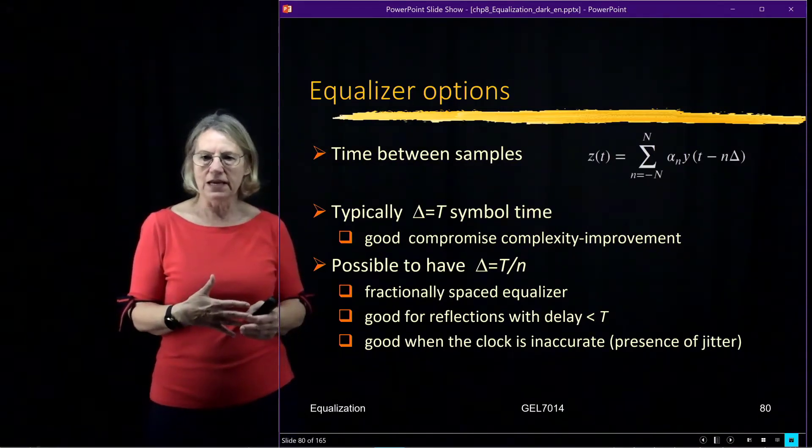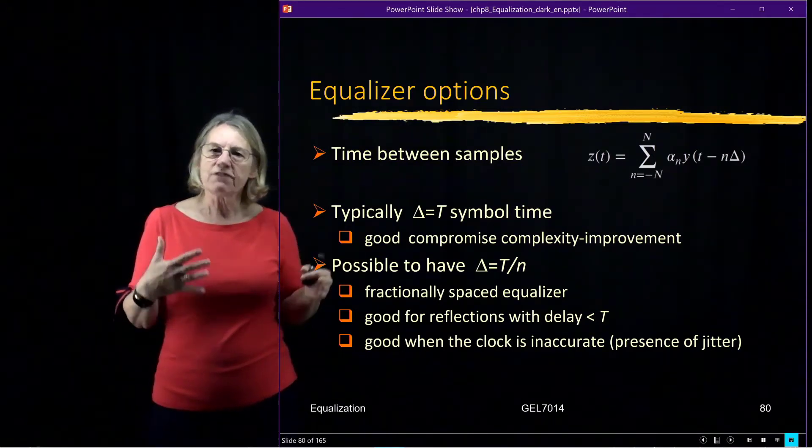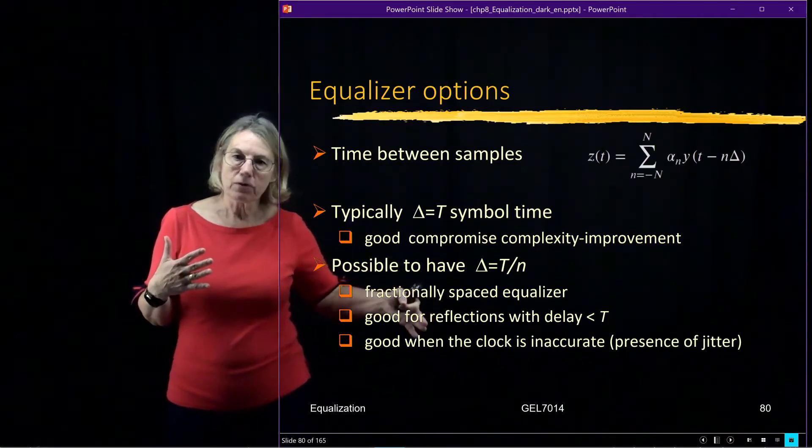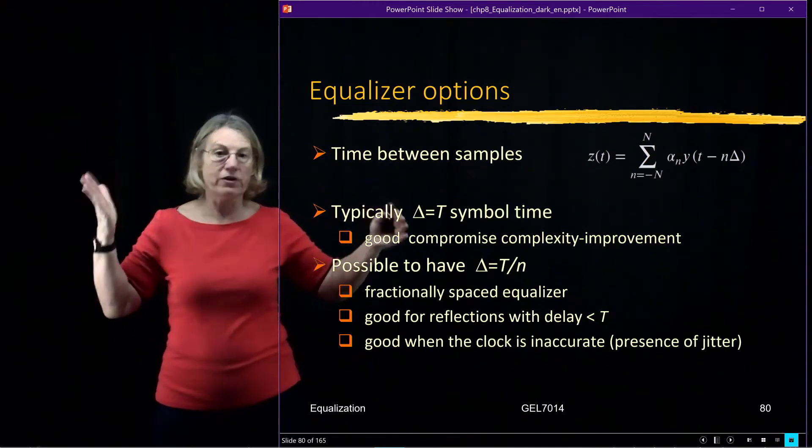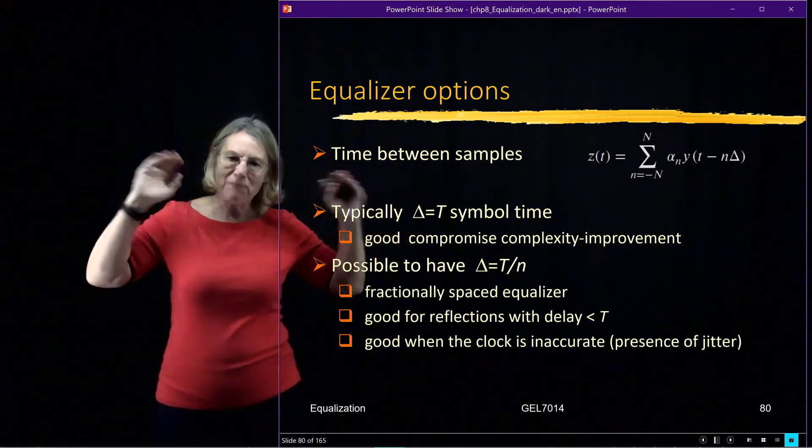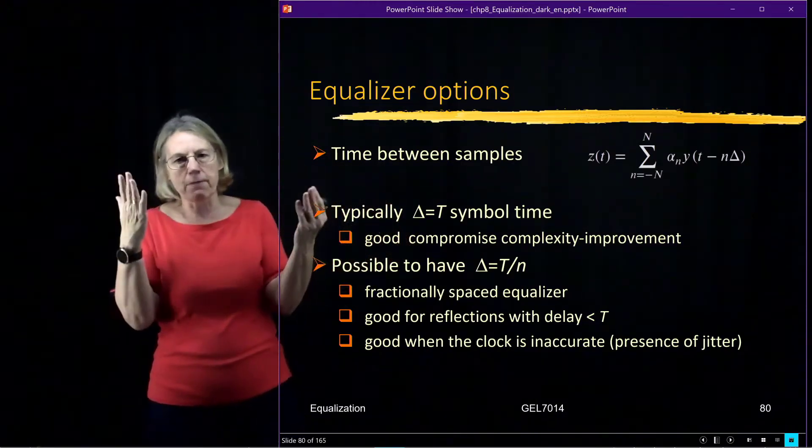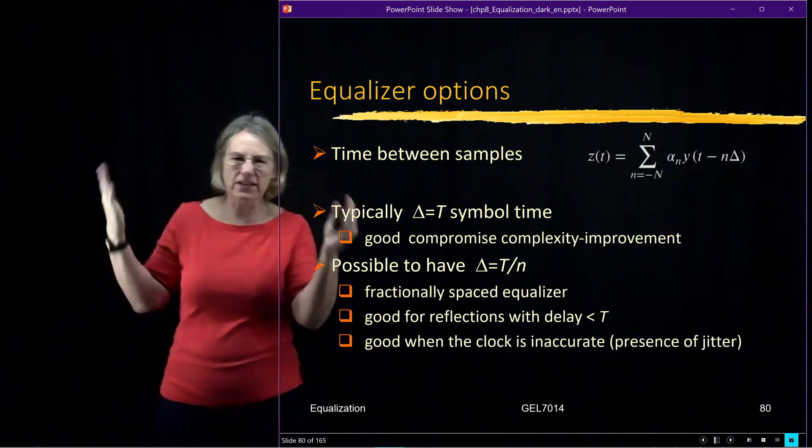So how many? Of course, if I make faster samples, then I will have, for the same memory length, okay? So I have memory length in the channel. And then I say, well, for that memory length, I should have a filter about this many taps.